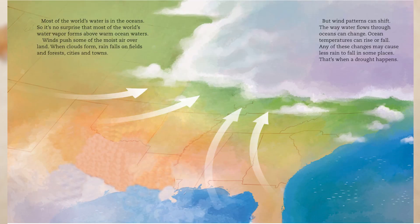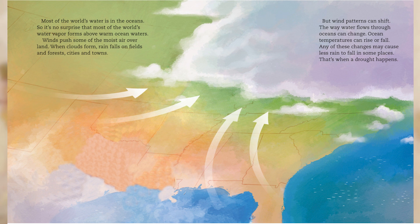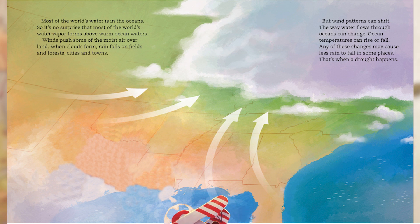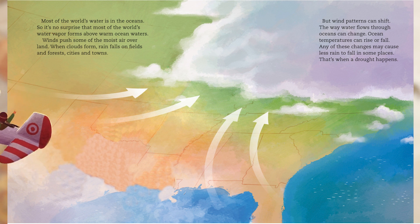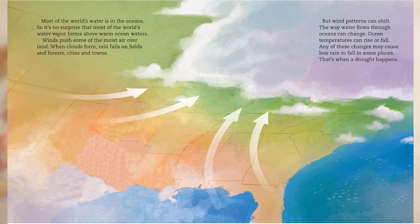Most of the world's water is in the oceans, so it's no surprise that most of the world's water vapour forms above warm ocean waters. Winds push some of the moist air over land. When clouds form, rain falls on fields and forests, cities and towns. But wind patterns can shift, the way water flows through oceans can change, and ocean temperatures can rise or fall. Any of these changes may cause less rain to fall in some places, leading to drought.